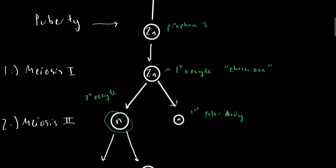Now, as this secondary oocyte leaves the ovary, it will travel down the fallopian tube and then wait for meiosis II to occur.